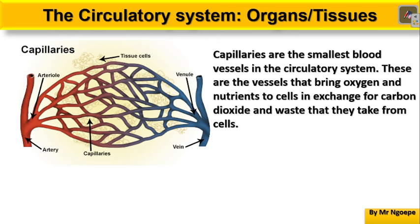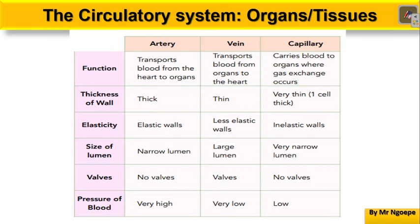The third type are capillaries — the smallest blood vessels in your body. These are one cell thick. These vessels bring oxygen and nutrients towards your tissues or cells. In exchange, they take carbon dioxide and other nitrogenous waste away from those tissues. In summary, blood vessels differ completely from each other by size, shape, and function.